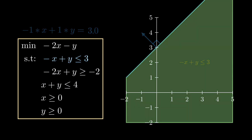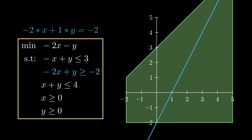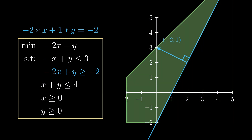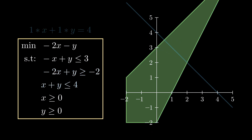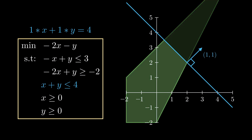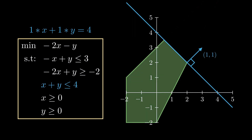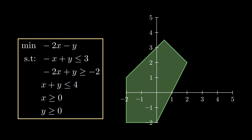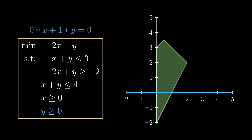We repeat this for each of the constraints. For the next constraint, the coefficients form the vector minus 2, 1. Since it's a greater than or equal to constraint, we take the half space in the direction of the normal vector. For x plus y less than or equal to 4, we take the half space opposite of the normal vector since we're dealing with a less than or equal to constraint. We do this for the last two constraints, which force x and y to lie in the positive quadrant.